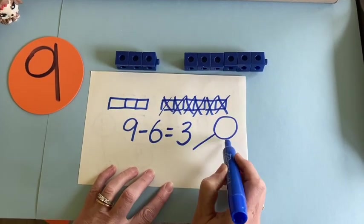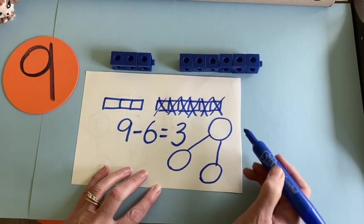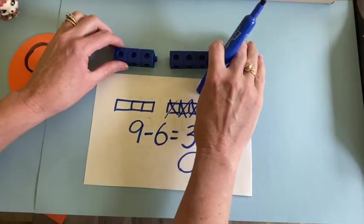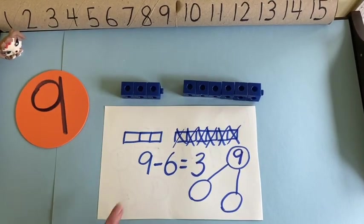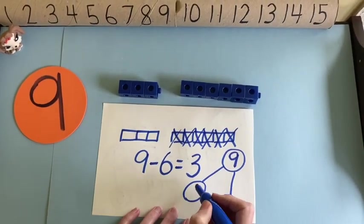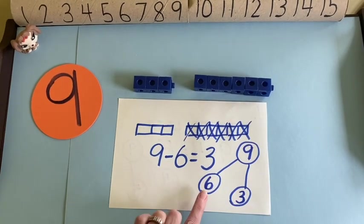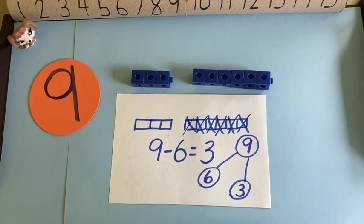Okay. Let's put it into a number bond. Big circle. My two lines. Part, part, whole. My whole is what I had all together when they were together. Nine. And then my two parts would be my six and my three. Because six plus three equals nine. Great.